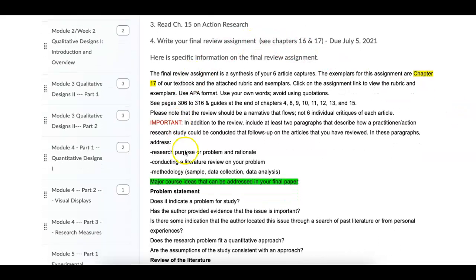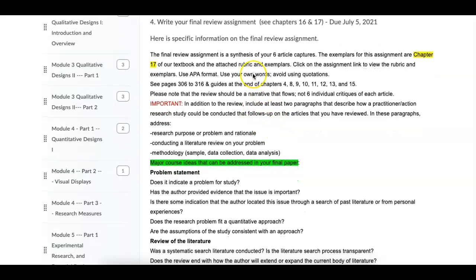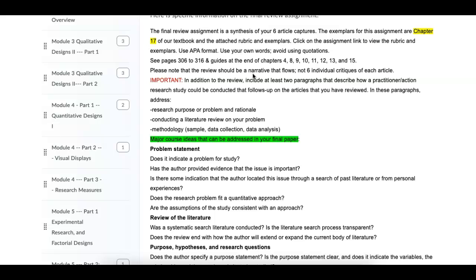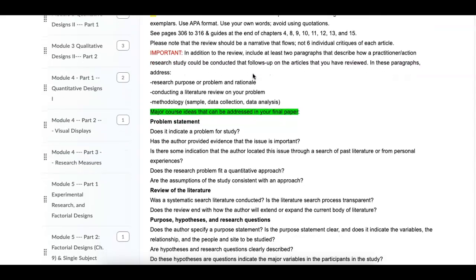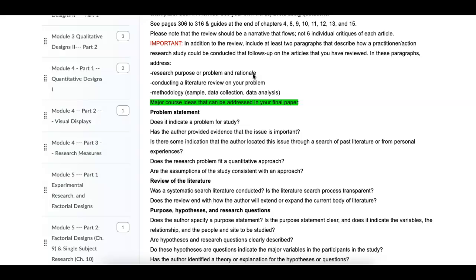Please take a look at the specifics for the final assignment. There's all kinds of information here, including information in the syllabus. What I'm looking for, and you can look at the detailed information about what is required, but what I'm really looking for is a synthesis paper. However, I'm not looking for six individual critiques of your research articles. We've done two critiques this semester, one on qualitative, one on quantitative.